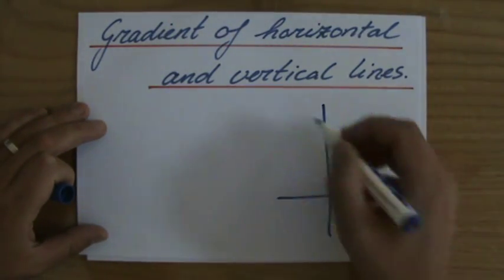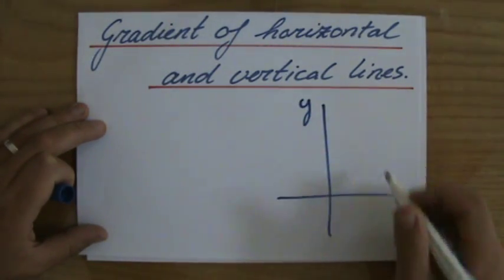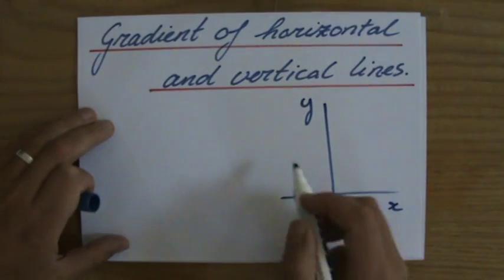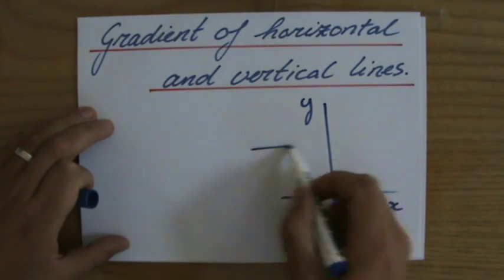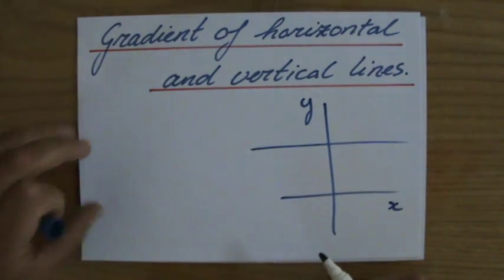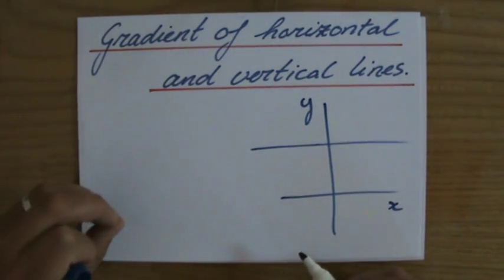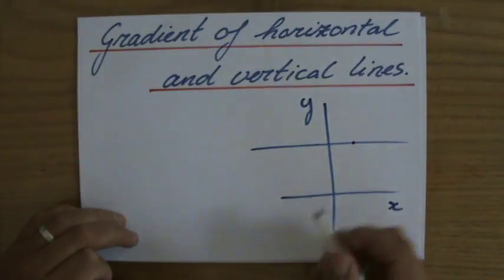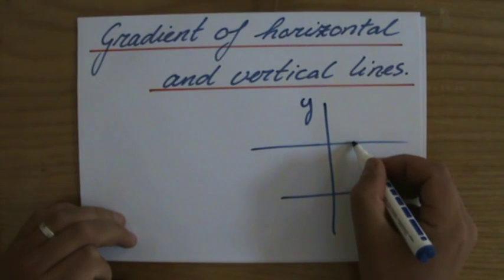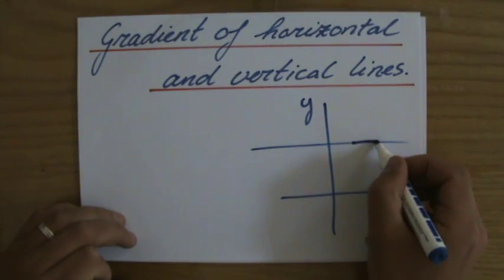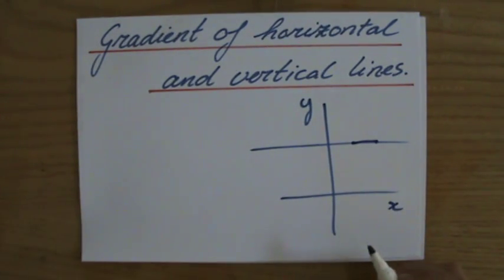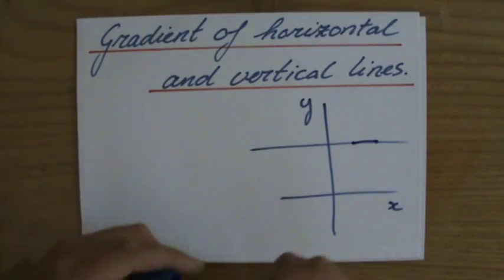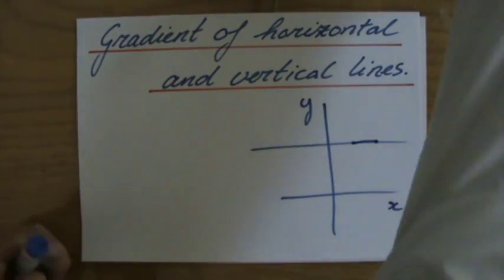Let me draw some axes very quickly. A horizontal line — the horizon — so that's a line like this. And I remember: gradient — I stand on my line, I go one step to the right. How many steps do I go up or down? Zero. So the gradient is zero for a horizontal line.